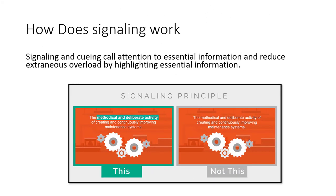Signaling works by highlighting, underlining, boldfacing, or drawing attention to a particular part of the information you want to highlight. It reduces the extraneous overload students have when they have to go through a paragraph and pick out what you want them to retrieve, helping them focus more on what's important.